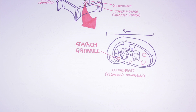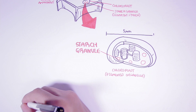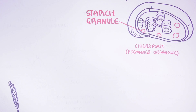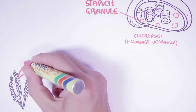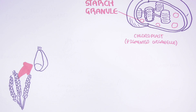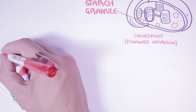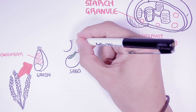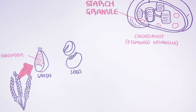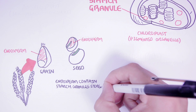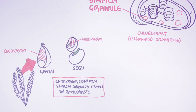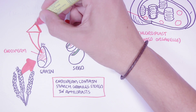Starch is not only stored within chloroplasts. It is also stored within another organelle known as amyloplasts. Looking at wheat as an example — wheat contains grains, and inside a wheat grain there is a region called an endosperm. Endosperm regions are also found within seeds. The endosperm is the region that contains starch granules stored in amyloplasts, so amyloplasts are found within endosperms.